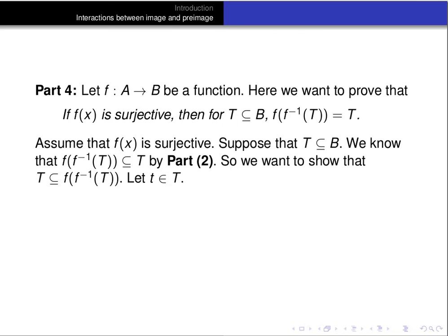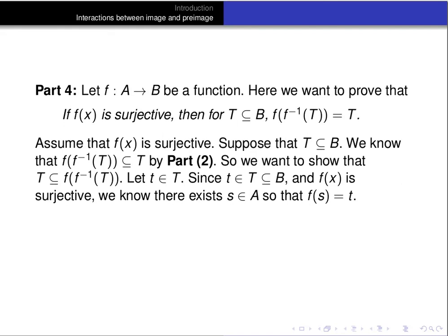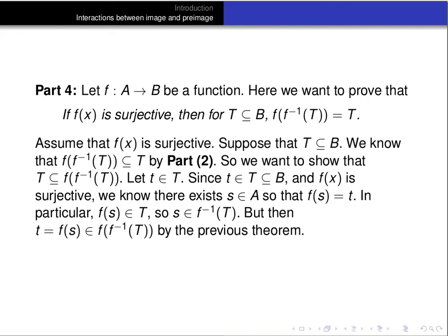Let little t be an element of the set T. Since f is surjective, every element of the co-domain is in the range, and t is in the co-domain, so there exists some s in A such that f(s) equals t. Since f(s) is an element of T, we know s is an element of the pre-image of T. That means f(s), which equals little t, is an element of the image of the pre-image of T. So little t is in the image of the pre-image of T, proving T is a subset of the image of the pre-image of T, and completing the proof of part 4.